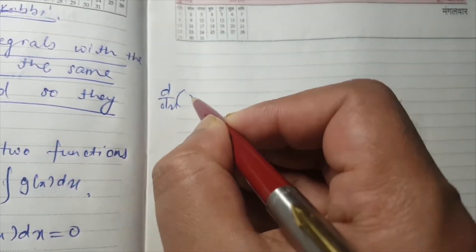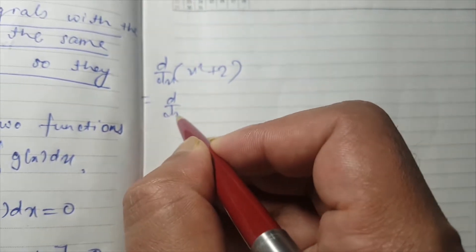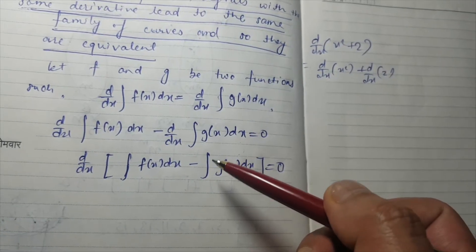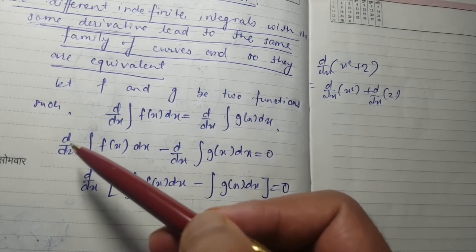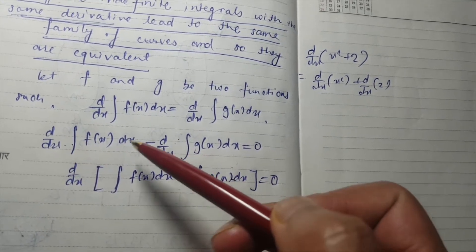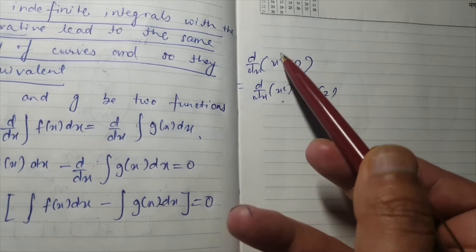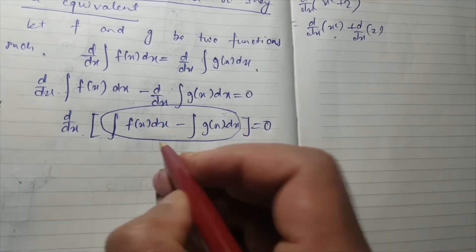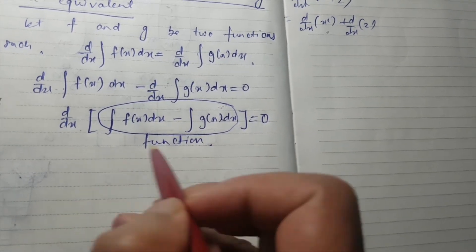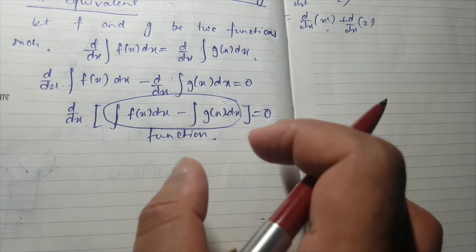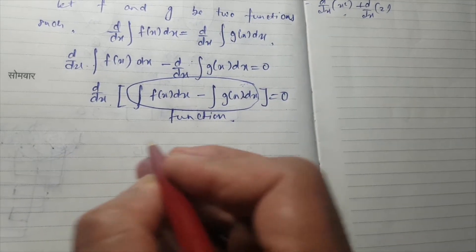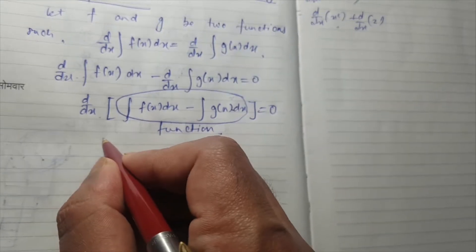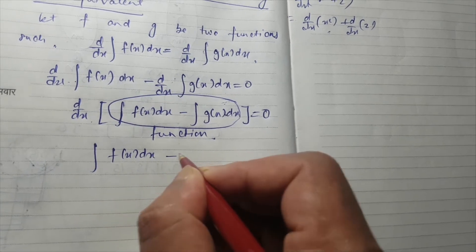For example, d/dx of (x² + 2) equals d/dx of x² plus d/dx of 2. Here I've done the opposite — I combined two individual terms into one expression. Now, since we have some function whose derivative is zero, that function must be a constant. So the difference of the two integrals must equal a constant.